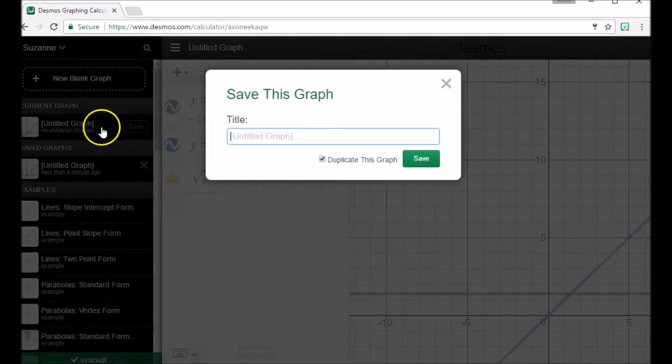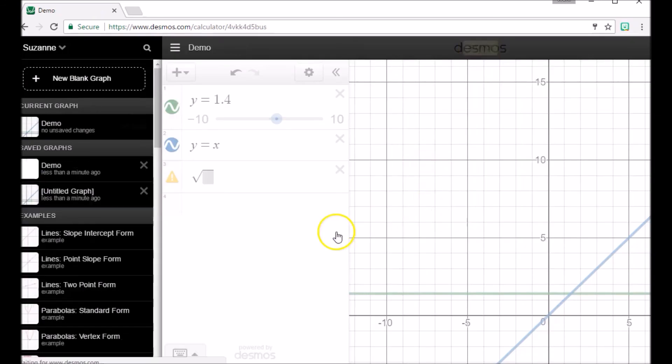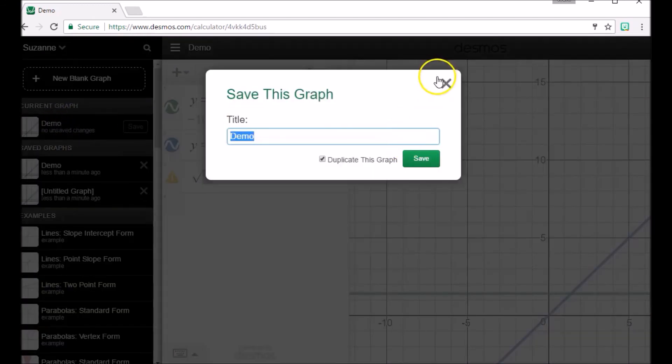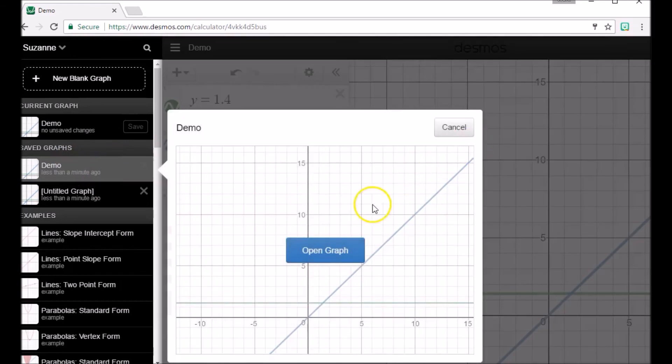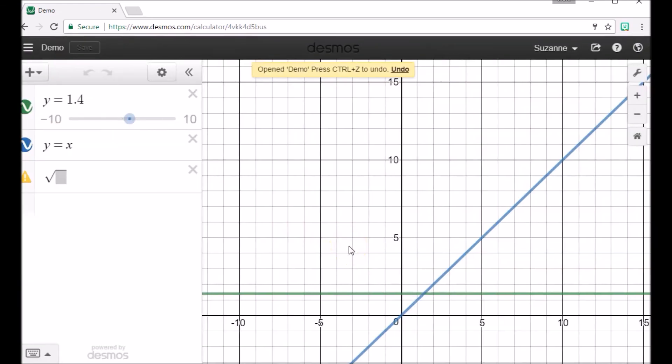And then if I want to look under here, I see this untitled graph. Well, I didn't actually title it, but I'm going to save it. So we've got demo here. Okay, saved. And then you can call it back up, open that graph, and there it is.